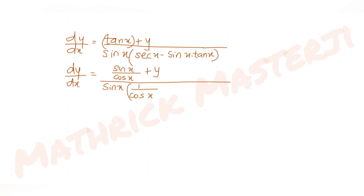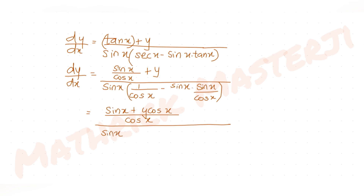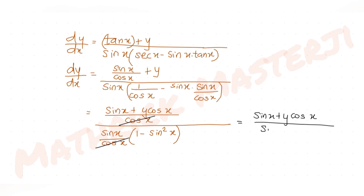For the denominator, I can factor out sin x · cos x, giving (1 − sin²x). Using the identity 1 − sin²x = cos²x, the denominator becomes sin x · cos²x. After cancelling the cos x terms top and bottom, I'm left with (sin x + y cos x) / (sin x · cos²x).